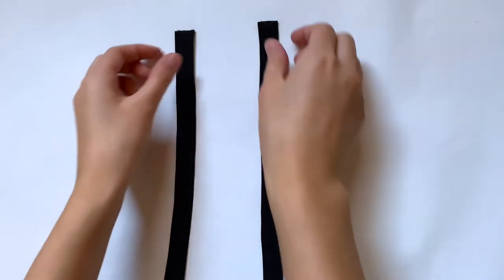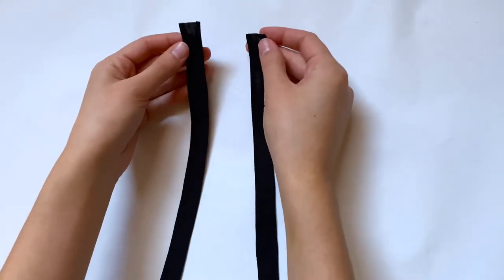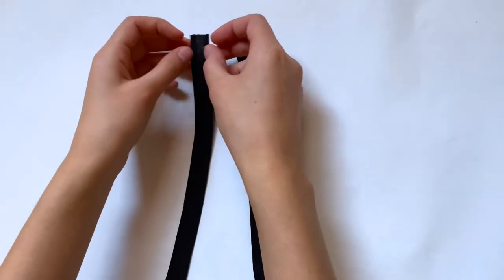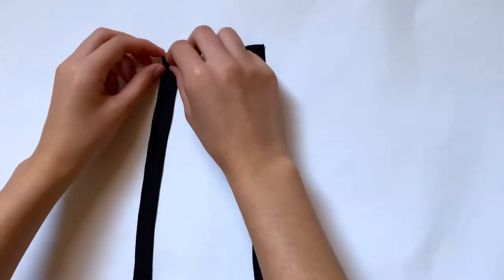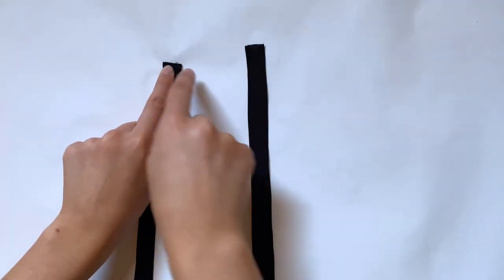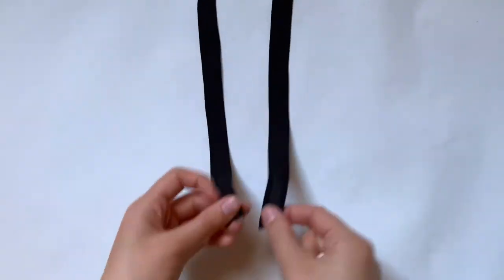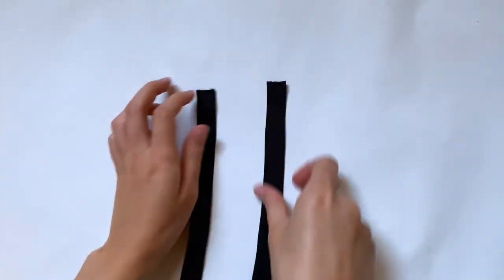After that's done I'm going to hem the top edge of each strap. I only have to do one of these because the other end will be attached to the overall pants itself so you won't see that edge. I'm just hemming that with a straight stitch. After that you'll want to grab the ends that you just hemmed and now I'm going to start marking where I want the button holes to be.